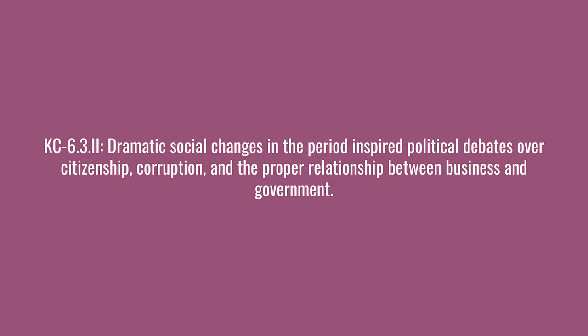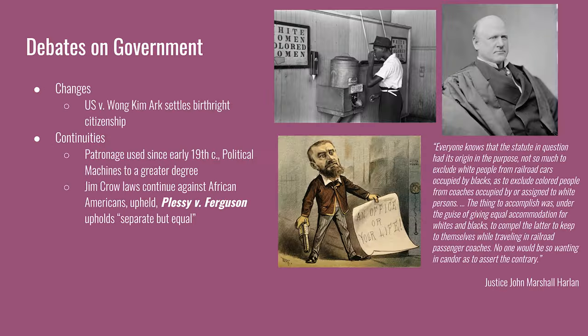The last key concept covers legal and political changes. The Supreme Court settles the question of birthright citizenship in U.S. v. Wong Kim Ark, ruling that if someone is born in the United States, regardless of their parents' ancestry or status, they are U.S. citizens. Jim Crow laws are part of a long pattern of laws limiting freedoms for African Americans — prior to the Civil War the main legislation was Slave Codes, during Reconstruction they passed Black Codes, and now Jim Crow laws are deemed constitutional by Plessy v. Ferguson, establishing the doctrine of separate but equal. The continuities include the patronage system — earlier in the century called the spoil system, especially used in the Jackson administration, though it is expanded by political machines.